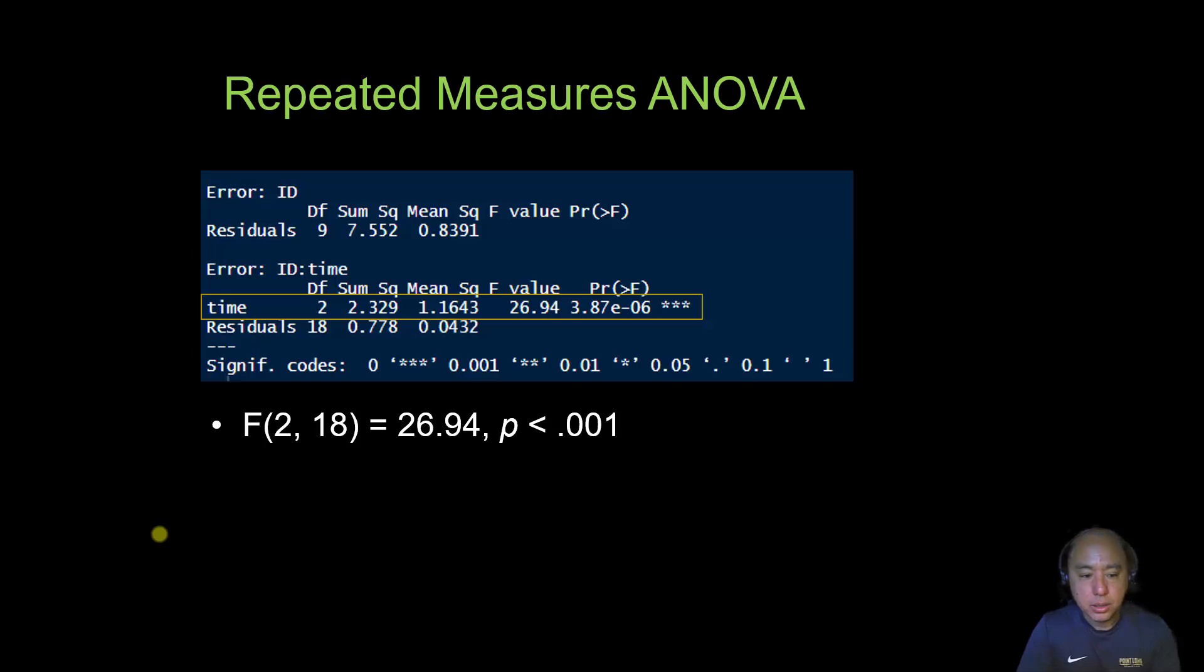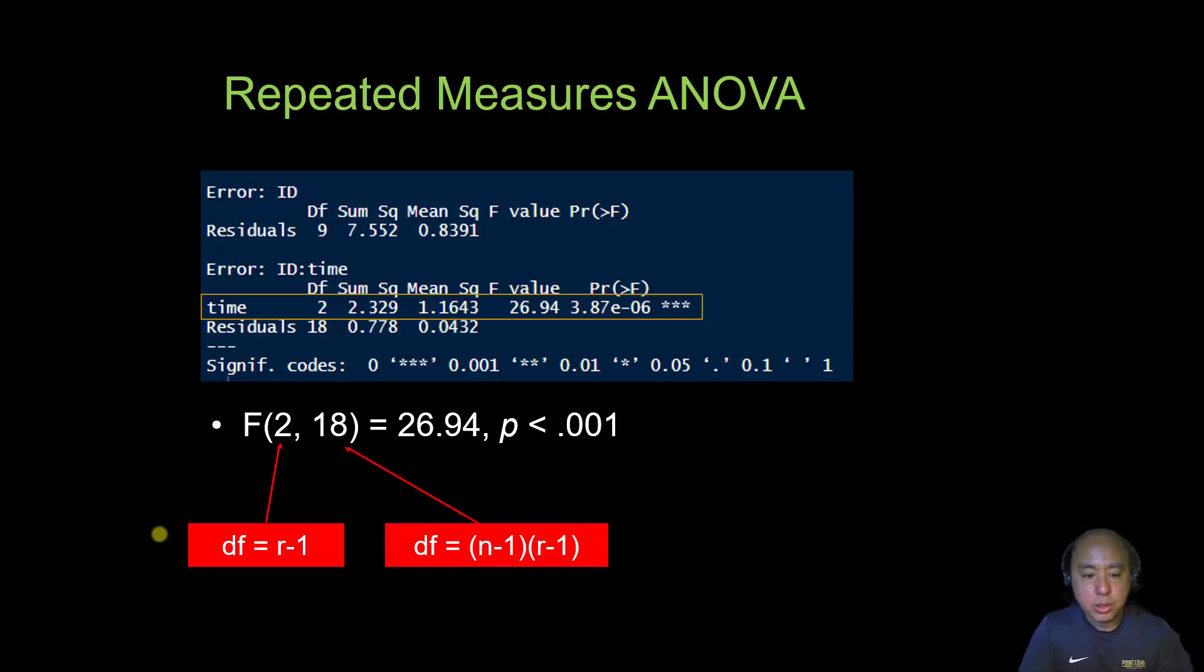The way you write this in APA format is like this. You have the F-statistic that is a function of the degrees of freedom due to time, and that's calculated by the number of repeated tests minus one, as well as the degree of freedom due to residuals. This is the sample size minus one multiplied by the degrees of freedom due to the number of repeated tests, which is repeated tests minus one. So that equals 18. Just to give you a heads up, there are 10 subjects in this group, so degrees of freedom due to subjects is 9. The number of tests is 3, so 3 minus 1 is 2, so 9 times 2 equals 18.